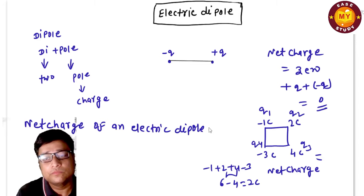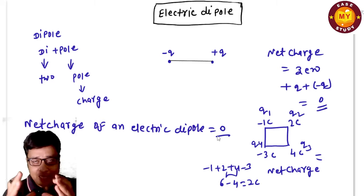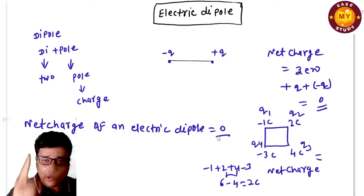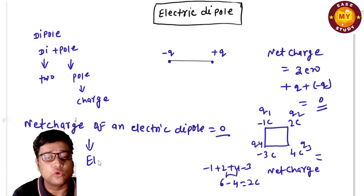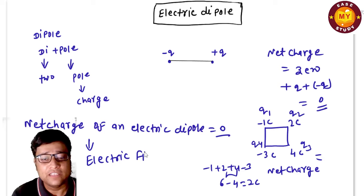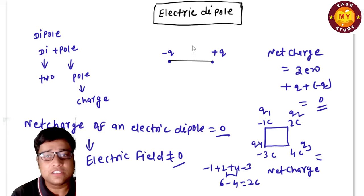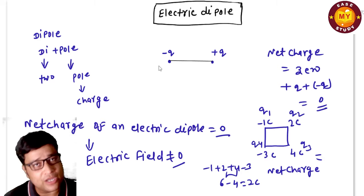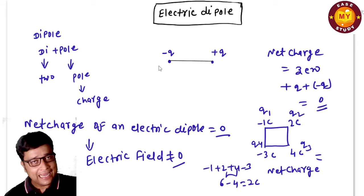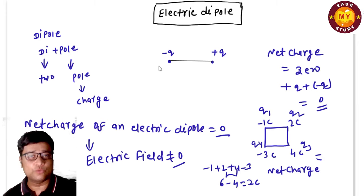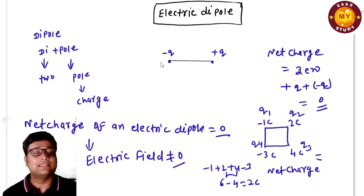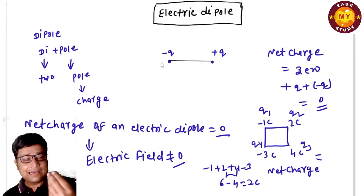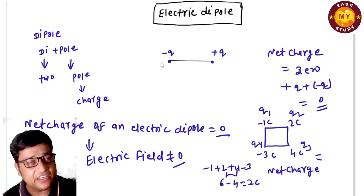The fact that the net charge is zero might make you think the electric field is also zero — but no, the net electric field is not zero. The electric field originates from the positive charge and terminates at the negative charge. However, at a far distance from the electric dipole, the electric field decreases drastically compared to that of a single point charge.